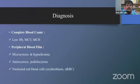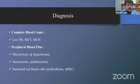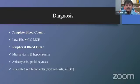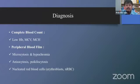How can we diagnose thalassemia? If we do a CBC and peripheral blood smear, we may find low hemoglobin level, low MCV and MCH. Peripheral blood smear will show microcytosis and hypochromia, sometimes anisocytosis and poikilocytosis. These RBC changes are evidence of thalassemia. Nucleated red blood cells — that is, immature red blood cells — may also be found in the peripheral blood.